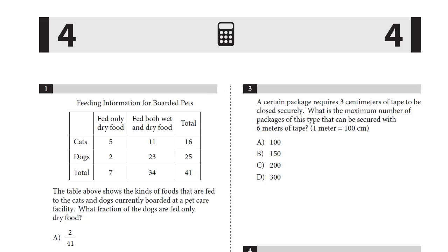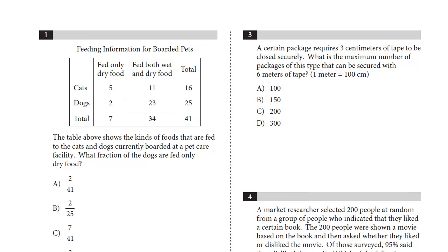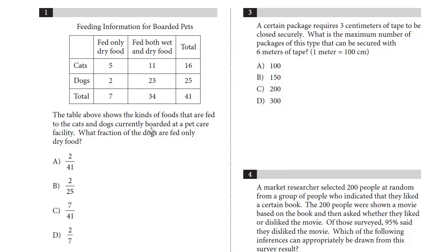All right, let's take a look at the first one. We've got this table feeding information for boarded pets. The table above shows the kinds of foods that are fed to the cats and dogs currently boarded at a pet care facility. What fraction of the dogs are only fed dry food? So we're only dealing with dogs. So what fraction of dogs? So the total dogs, 25, are only fed dry food. That's this column. So it's just really 2 over 25. Pretty straightforward question, B.